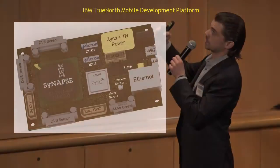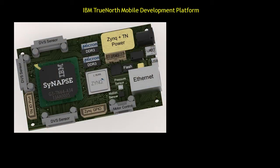We have a Zynq GPIO connector that lets you connect additional circuitry straight to the Zynq. Besides the Zynq connections, we also have TrueNorth connections directly. Around the boundary of the TrueNorth chip we have three DVS sensor connectors specifically designed to connect to Tobi Delbruck's dynamic vision sensor — we can connect up to three of these sensors simultaneously. We also have a general TrueNorth I/O port connector for any sensor that can speak the language of spikes directly to TrueNorth.